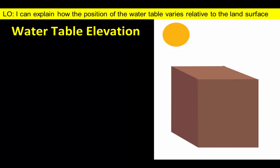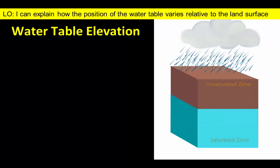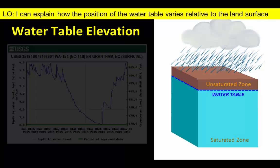The water table is the minimum depth that we would need to drill to ensure a consistent supply of groundwater. The greater the water supply, the higher the elevation of the water table. We expect the water table to show some seasonal fluctuations and to rise during wet periods and fall during drier months.